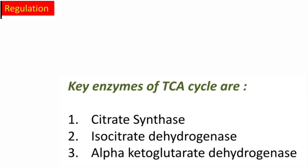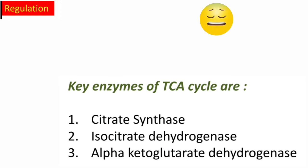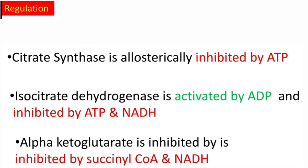Coming to regulation: the key enzymes of the TCA cycle are citrate synthase, isocitrate dehydrogenase, and alpha-ketoglutarate dehydrogenase. The rate of TCA cycle depends upon these three key enzymes, whose activity depends upon the energy status of the cell. If the cell is in an energy-rich state with high ATP or NADH, it leads to decreased activity of these key enzymes. If the cell is in an energy-poor state — when ADP and NAD concentration is more than ATP and NADH — it activates the key enzymes. Citrate synthase is allosterically inhibited by ATP; isocitrate dehydrogenase is activated by ADP and inhibited by ATP and NADH; alpha-ketoglutarate dehydrogenase is inhibited by succinyl-CoA and NADH.